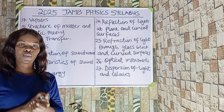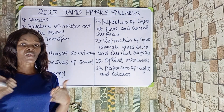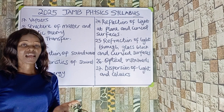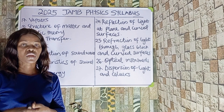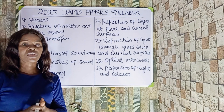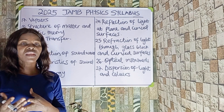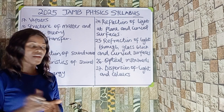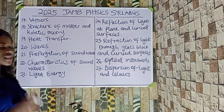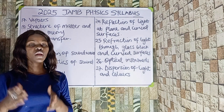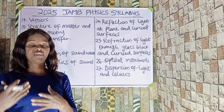Number twenty is waves. You should know what waves are, the characteristics of waves, types of waves, classes of waves, the progressive wave equation, and the properties of waves. These are the things we should be looking at under waves.